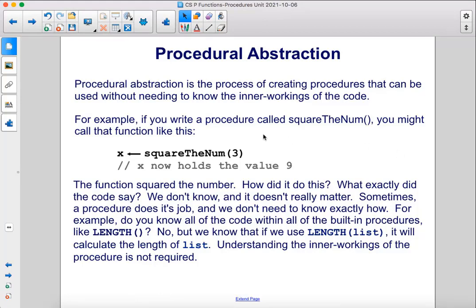For example, if you write a procedure called square the num, you might call that function like this. Square the num 3 saved the results of that in an x variable. So x now holds the value 9.